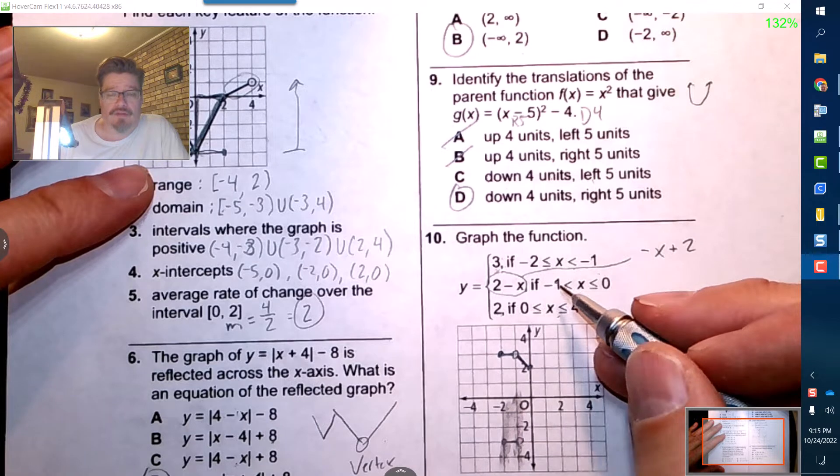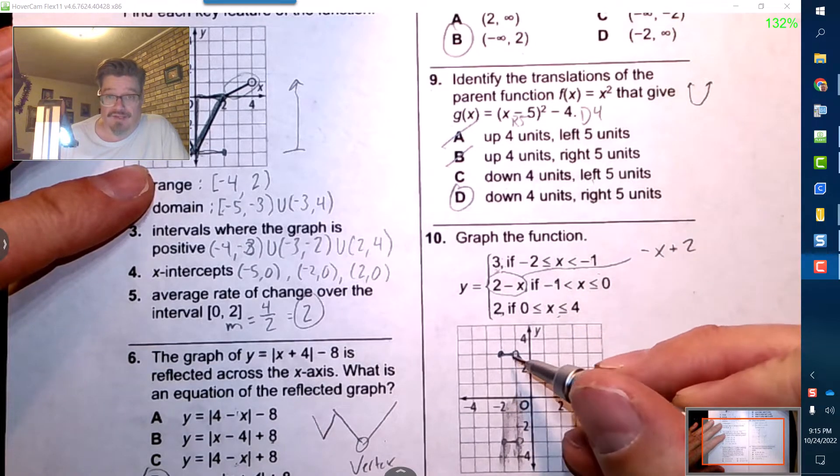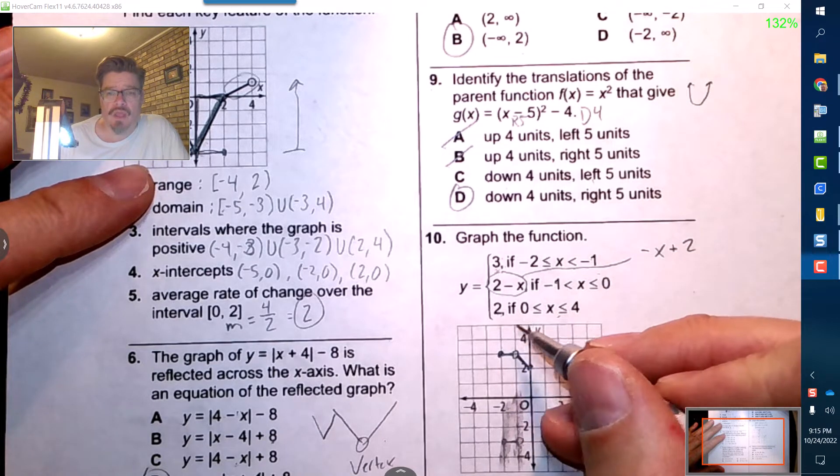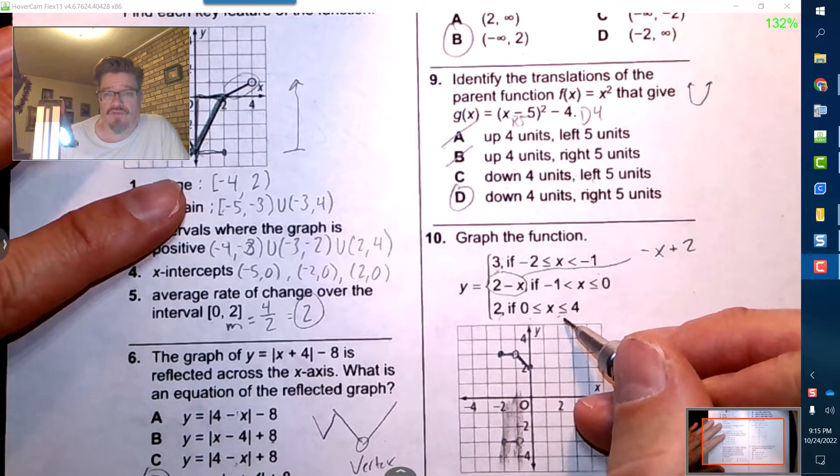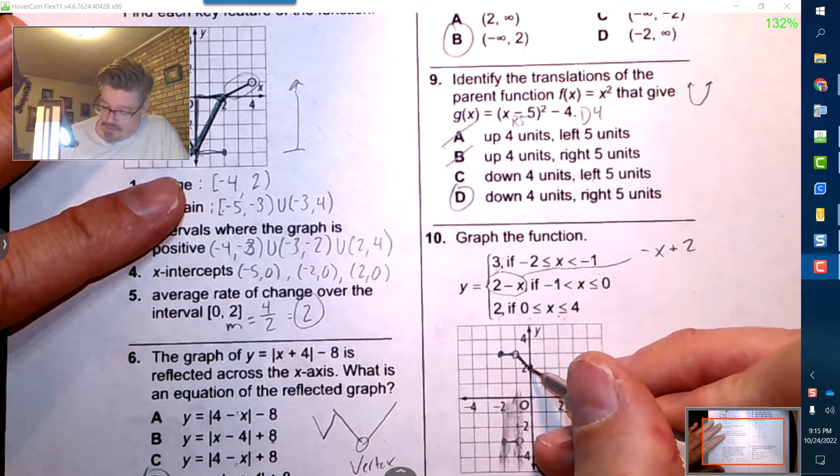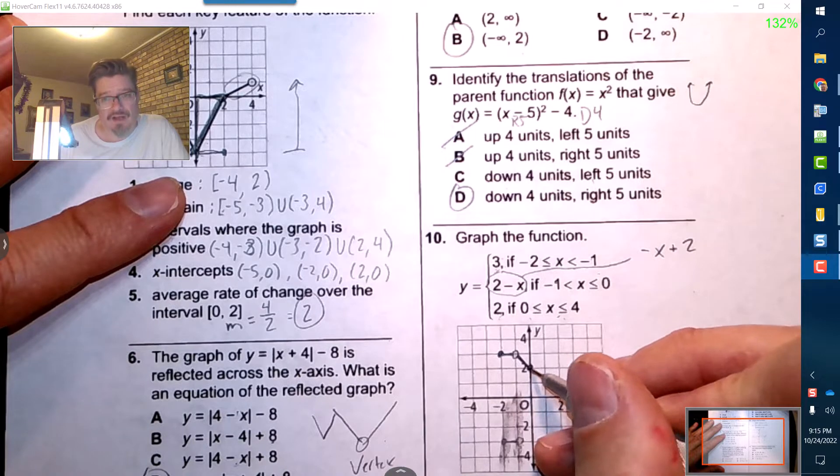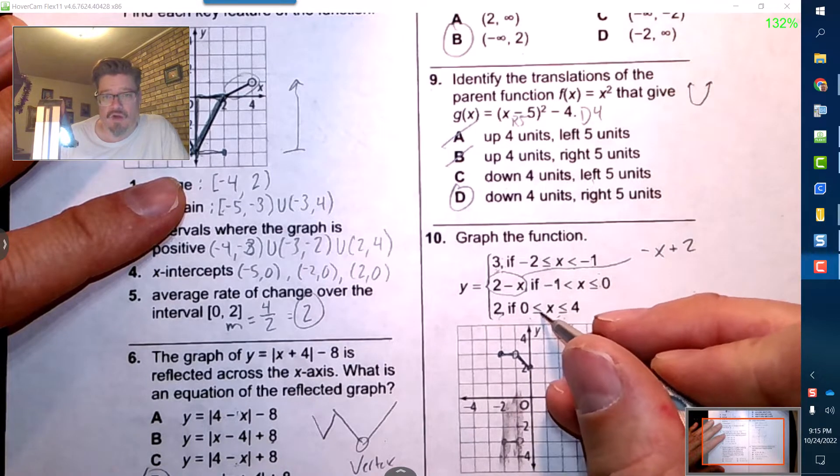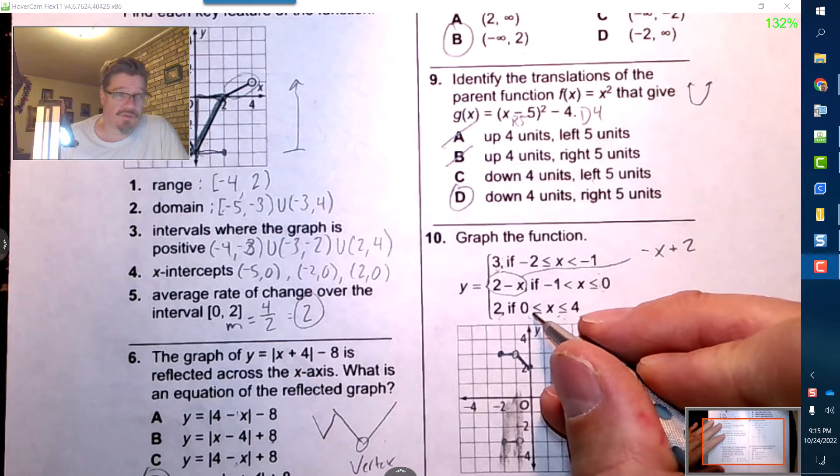But then now we're going to have 2, this guy's done, very short function. It was just a little jog down and now we're going to be at positive 2 from zero all the way to 4, and that is going to include positive 2, but he's already included.